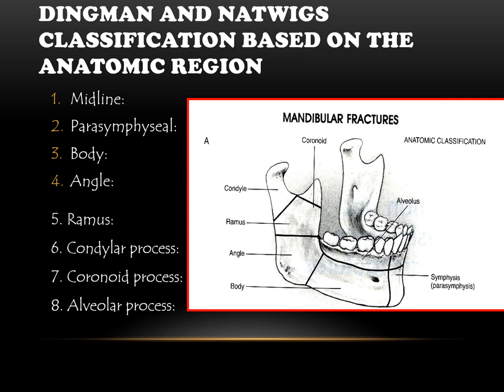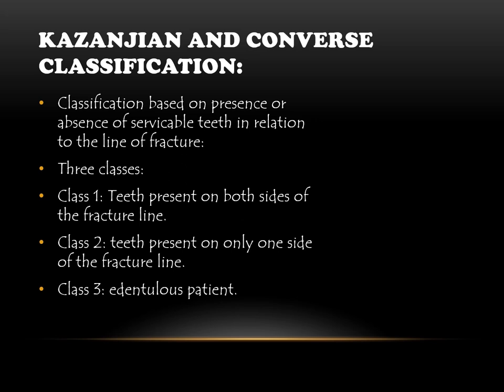Coming to the Dingman and Natvig classification, which is based on the anatomic region of the mandible: it is divided into the midline, parasymphysis, body, angle, ramus, coronoid and condylar process, and the alveolar process of the mandible.